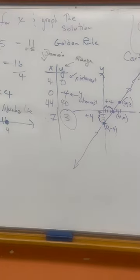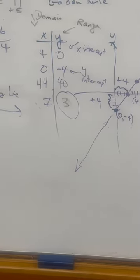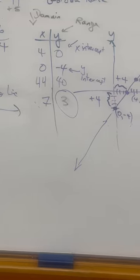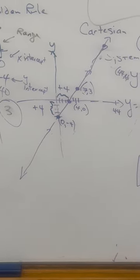We can use that to plot points for the other points of the line: 4, 0, 0, negative 4. If we pick 4, we'll get 0, or 7, 3. And then we have a line, and so we have a graph. So that's how you get to go from an equation to a graph.